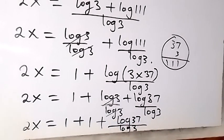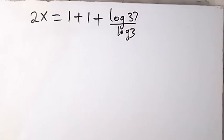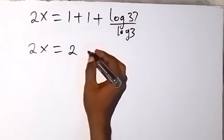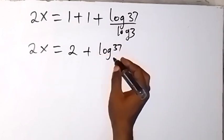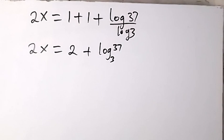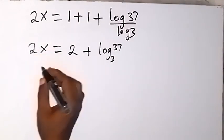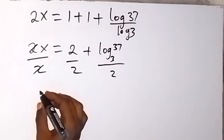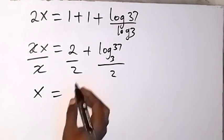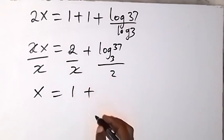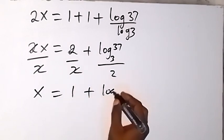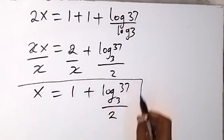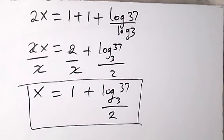When we apply change of base here, this one becomes 2x equals to we have 1 plus 1, that's 2, plus, we can write this as log 37 base 3. When we use change of base, from there, let's divide through by 2. Since we are finding x, we can divide through by 2, and then we have 2 cancel 2 here, we have x left. So x equals to 2 divided by 2 here, we have 1, then plus, this one remains log 37 base 3, all over 2. And here, we have the values of x, and we have come to the end of the solution.